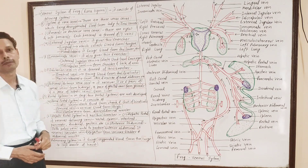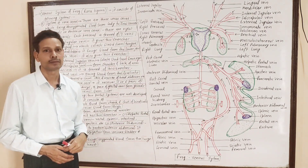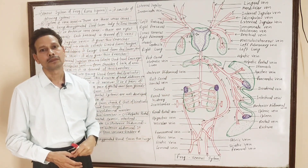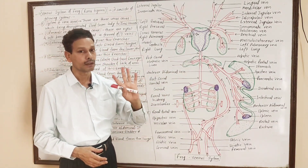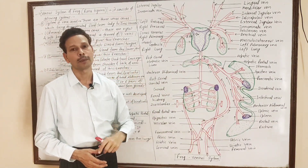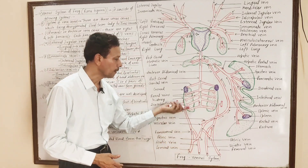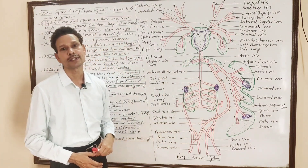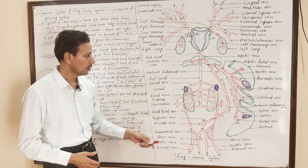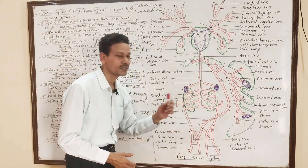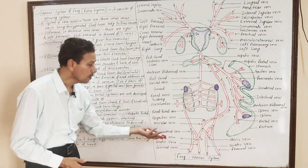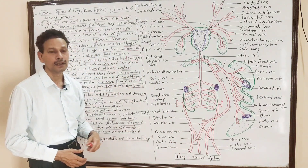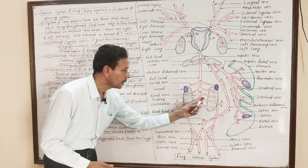In this venous system, two portal systems are well developed: one is the renal portal system and the second is the hepatic portal system. In the renal portal system, blood from the lower body parts comes to the kidneys.